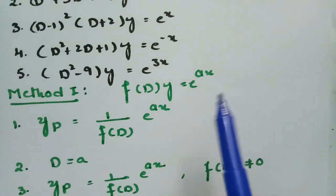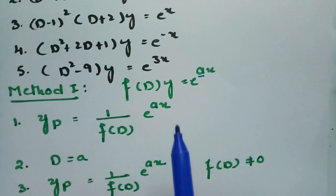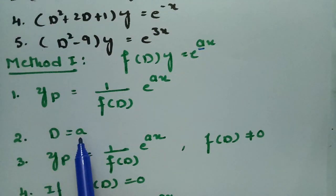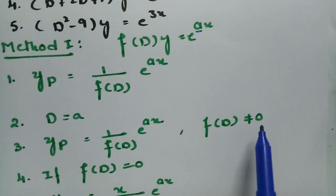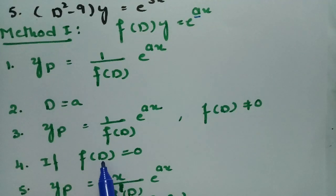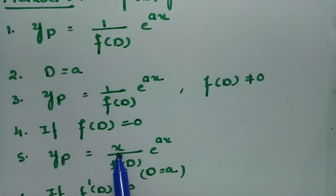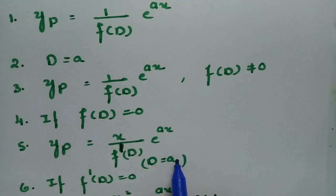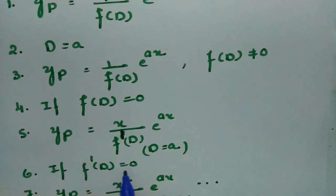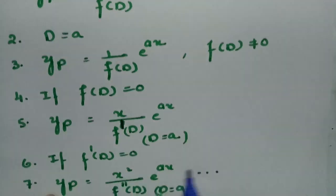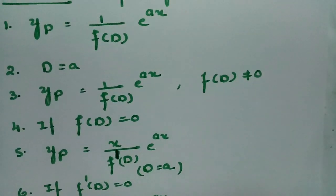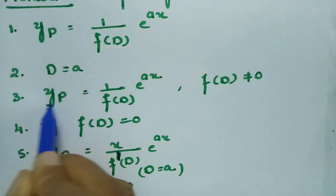So a is the coefficient of x. If it is minus 1, we replace D with minus 1; if it is plus 1, we replace D with plus 1. After replacing D with a, if the result is not equal to zero, that gives us the particular integral directly.